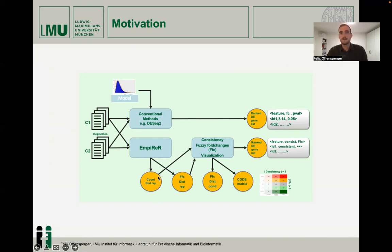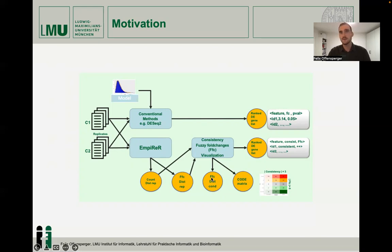By FASI binning, it estimates empirical error distributions of the data. It computes FASI fold changes (FFCs) based on the consistency of a feature compared to the rest of the data in the same condition (FFC-REP) and across conditions (FFC-CONT), resulting not only in a ranked gene list, but also in a categorical assignment of features combining consistency and effect in differential expression into code matrices.